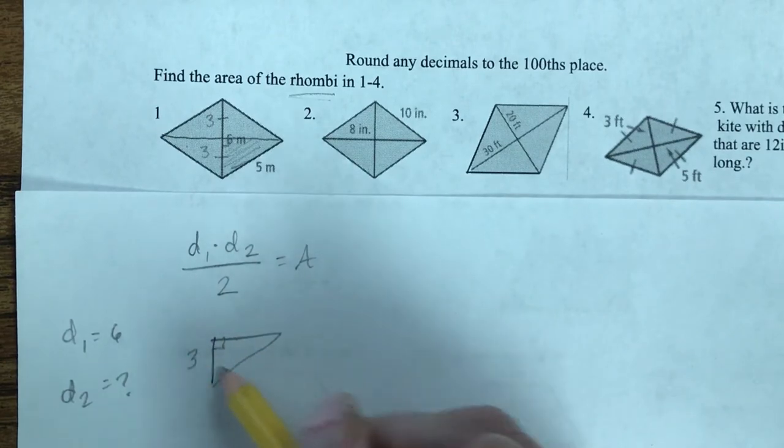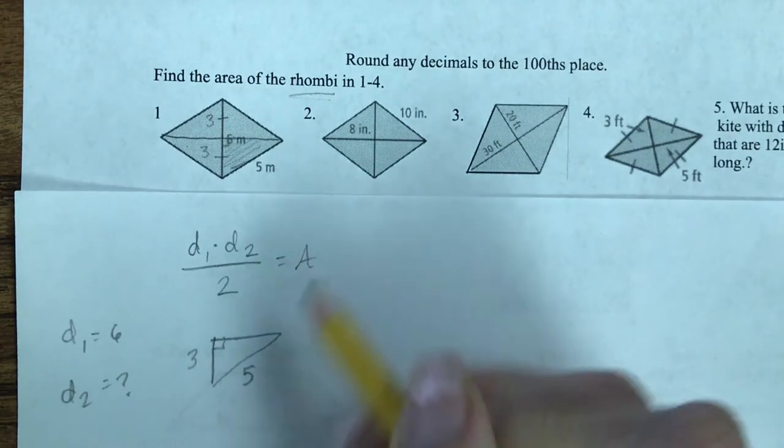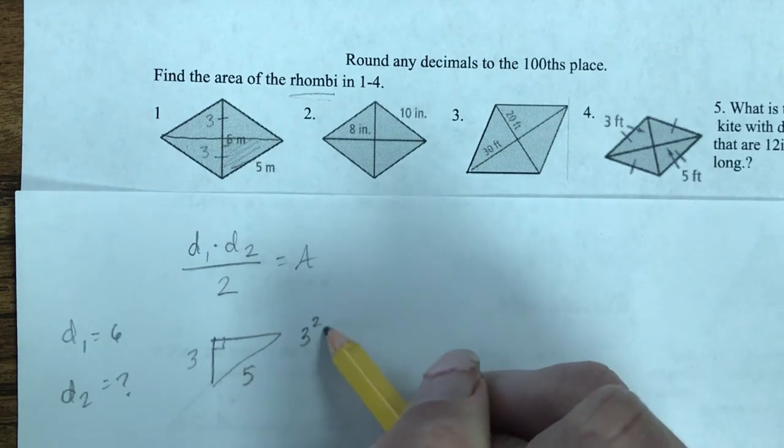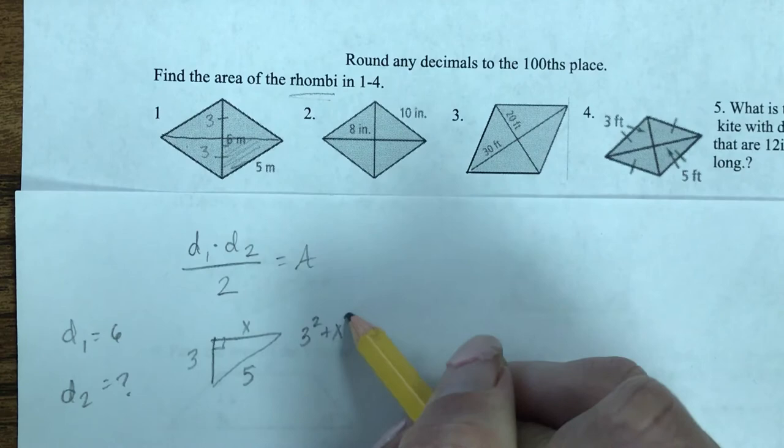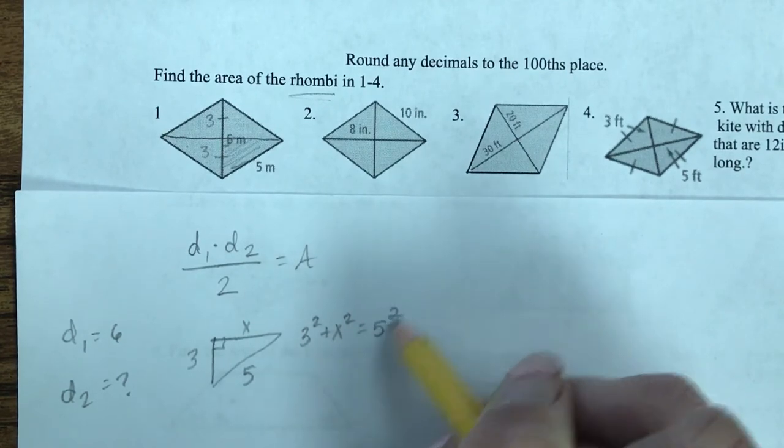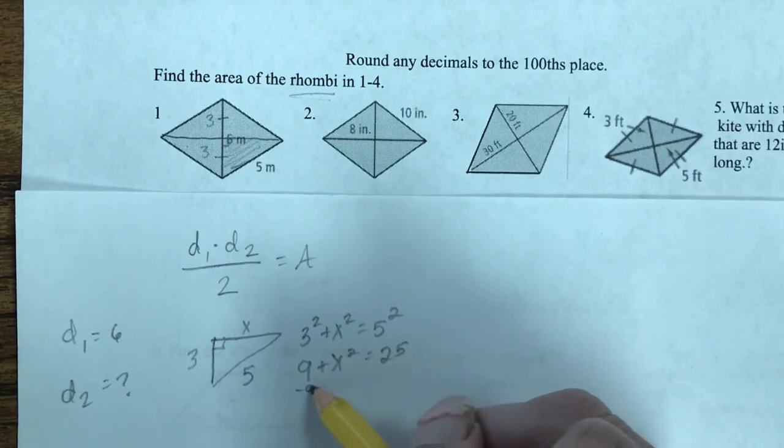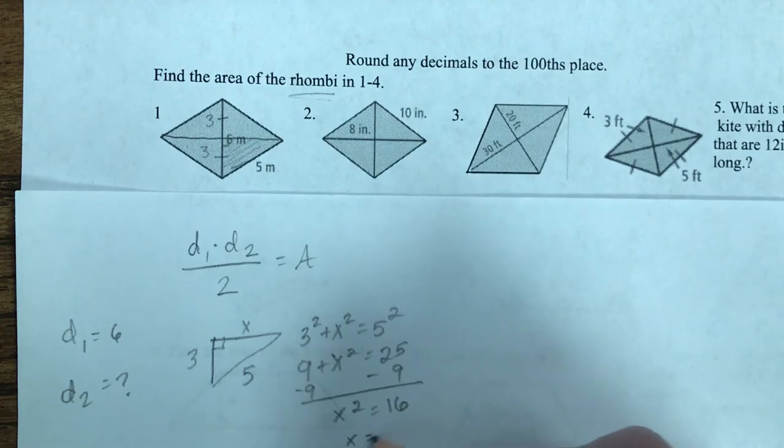So that's going to be 3 and 5, and I can solve the Pythagorean theorem to figure out that part right there. So I can say 3 squared plus x squared equals 5 squared. So 9 plus x squared equals 25, and if I move the 9 to the other side, I get that x squared is 16, making x equal to 4.